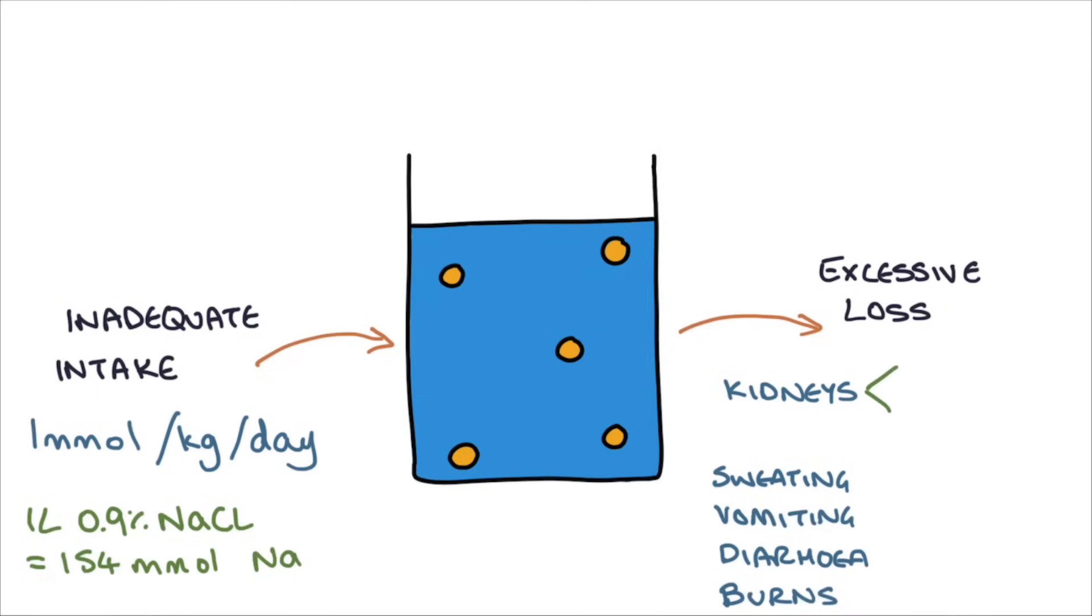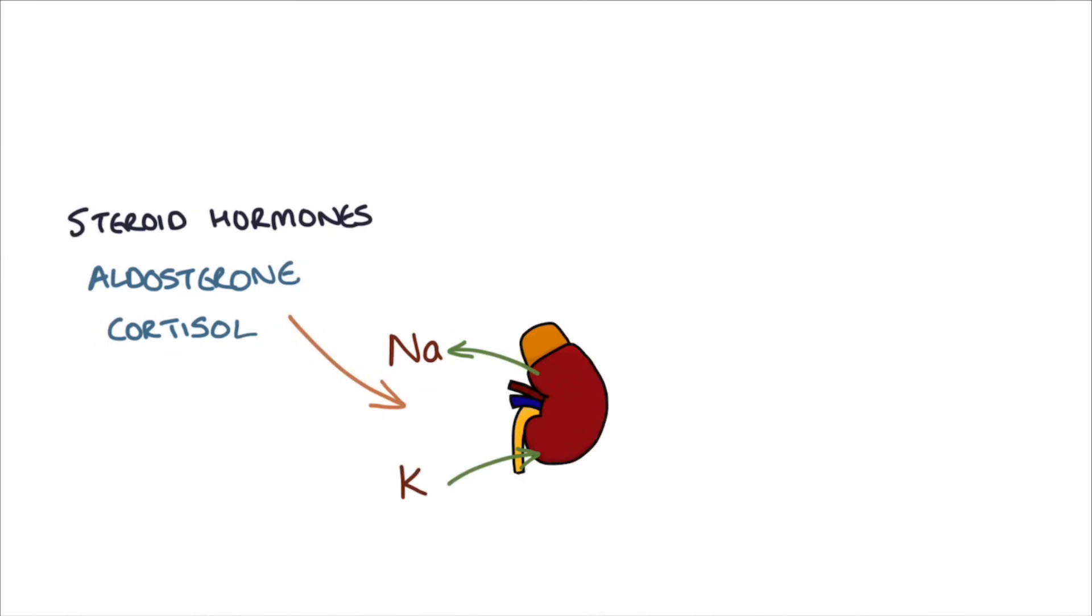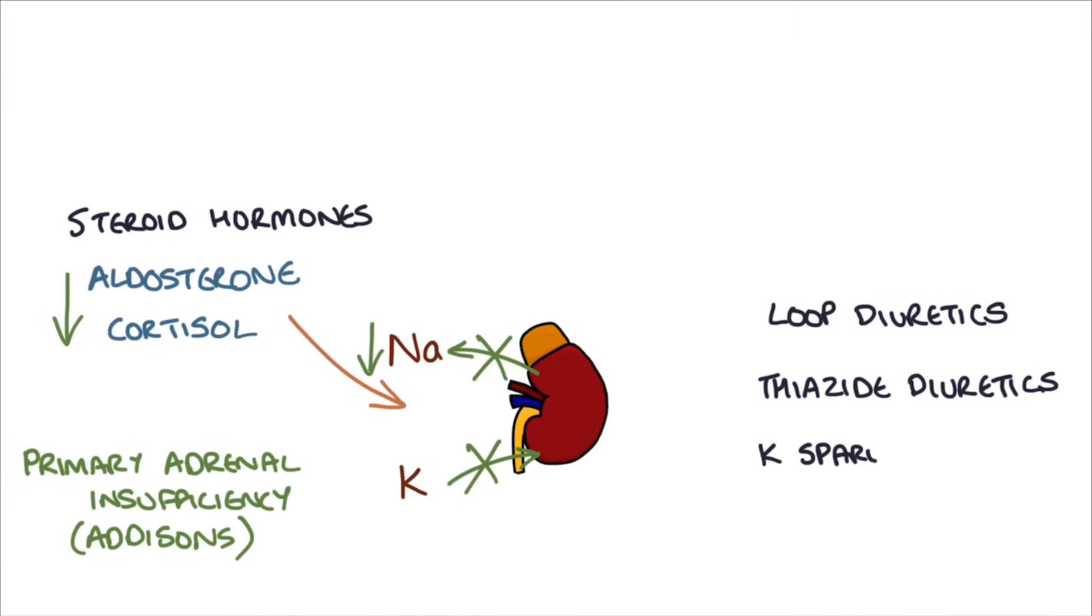There are two main ways that sodium is lost through the kidneys. Firstly, it can be a shortage of steroid hormones, and secondly, it can be through the use of medication such as diuretics. Steroid hormones such as aldosterone and, to a lesser extent, cortisol cause sodium reabsorption and potassium excretion in the kidneys. In conditions like primary adrenal insufficiency or Addison's disease, there is a deficiency in these steroid hormones, and this prevents adequate reabsorption of sodium in the kidneys. Loop diuretics, thiazide diuretics, and potassium-sparing diuretics all act to prevent sodium reabsorption, and as a result, these medications can all lead to hyponatremia.